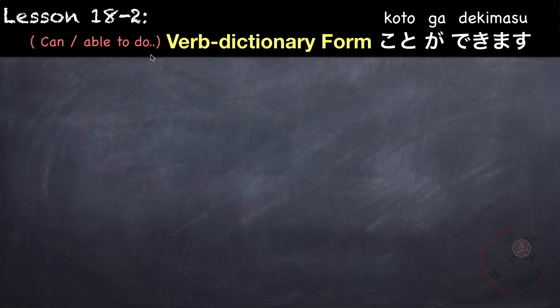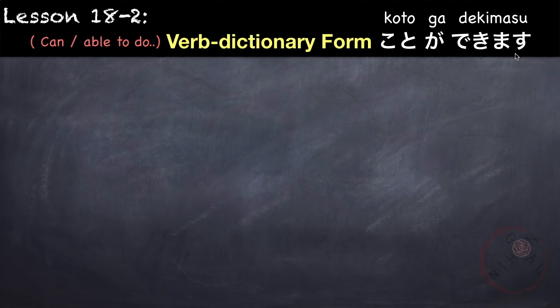Next is how to express 'can' or 'able to do something.' We use the dictionary form of the verb followed by koto. Koto means 'thing,' so by adding koto to the dictionary form of the verb, we are essentially changing the verb into a noun — or in English, a gerund. So if we want to say 'can' or 'able to do a verb,' we say: verb dictionary form + koto ga dekimasu. Dekimasu means 'can' or 'able to.'